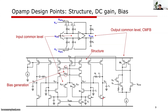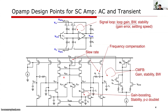For a fully differential amplifier, a common mode feedback circuit is a must-have. Considering input and output common level and swing range, we need to properly generate the amplifier's bias voltages. For AC and transient considerations, we need to guarantee sufficient bandwidth in the signal loop for faster settling with a certain phase margin for stability. Note that not only the signal loop, but also the gain-boosting loop and common mode feedback loop must be stable, so we need to carefully verify stability.